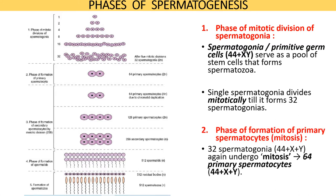The second phase of spermatogenesis includes the formation of primary spermatocytes. After 32 spermatogonia are formed, they again undergo mitotic division to form 64 primary spermatocytes. The primary spermatocytes are large cells having diploid number of chromosomes, that is 44XY.